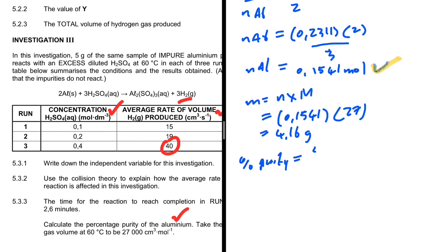Percentage purity = (mass of pure aluminium / total sample mass) × 100 = (4.16 / 5) × 100 = 83.2%. That is the percentage purity of the aluminium.